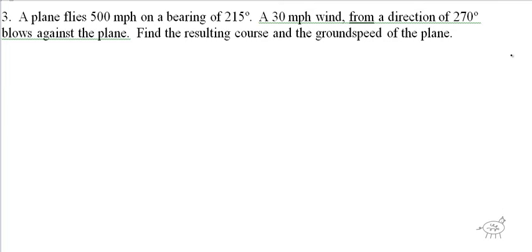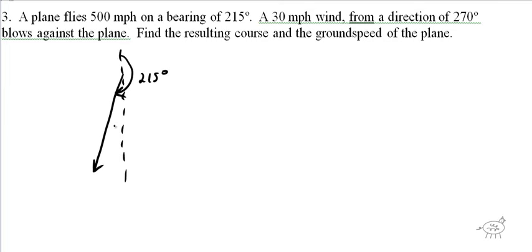Next problem: a plane flies 500 miles per hour on a bearing of 215 degrees. So let's draw our dotted bearing line — 215 degrees is about that, and that's 500 miles per hour. And there's a 30-mile-per-hour wind from the direction of 270 degrees. Remember — draw your dotted line by the tip of the arrow because it's hitting the front of the plane, and it's from a direction of 270.